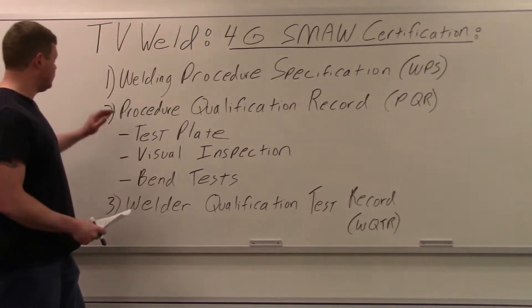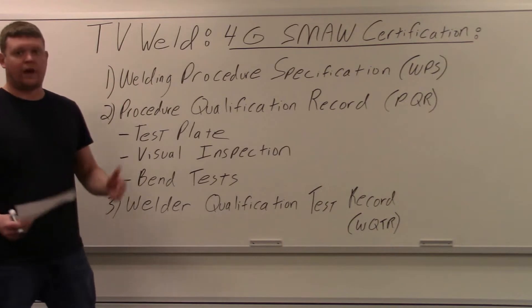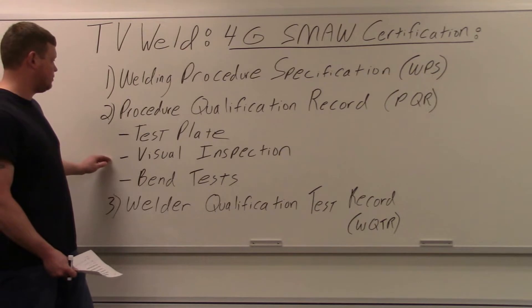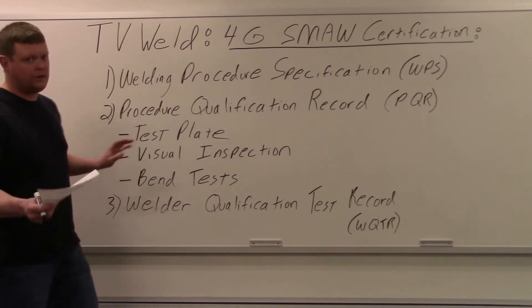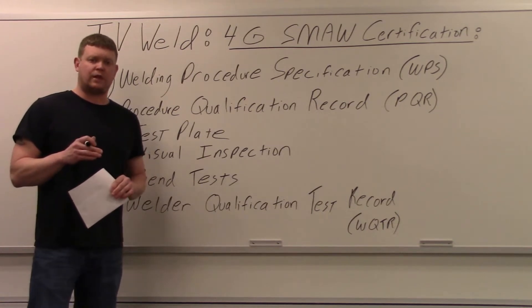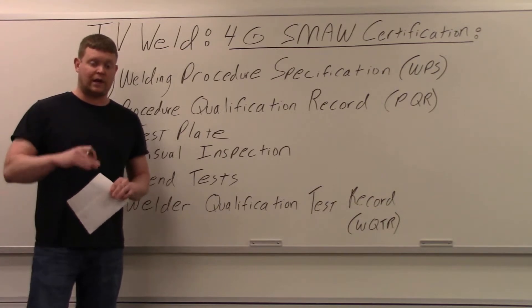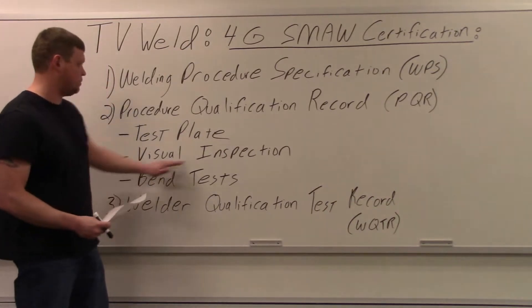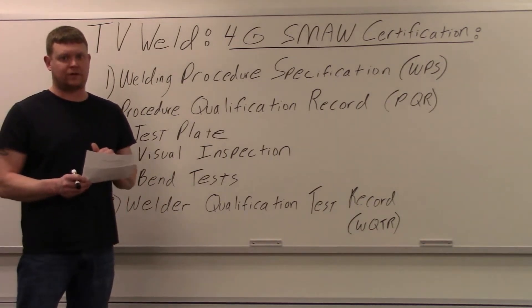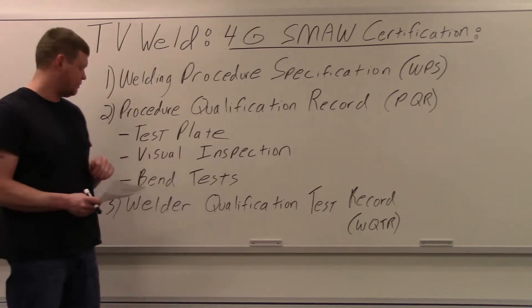We already talked about the test plate and visual inspection. Actually you have to pass your visual inspection according to the code book. We're using the AWS D1.1 structural steel welding code in order to say it meets everything in that code as a visual inspection. You have to do that before you can go to bend tests. If you don't meet visual inspection qualifications, you cannot go to bend tests. You got to pass your visual inspection first.